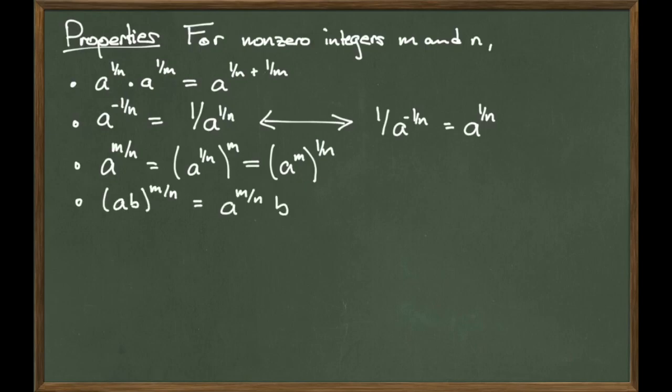Last, if I have the numbers a times b raised to the m over n power, I can write that as a to the m over n times b to the m over n. This is because the quantity inside the parentheses is a product, which means I can place the power on each term a and b.